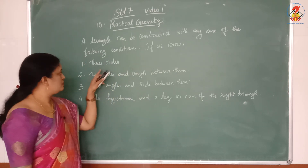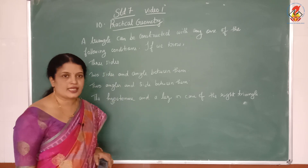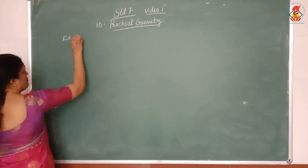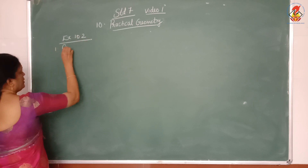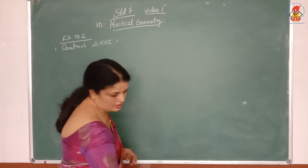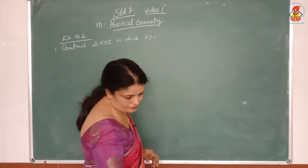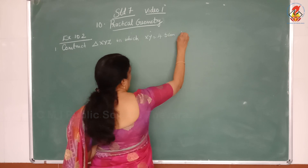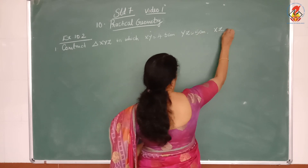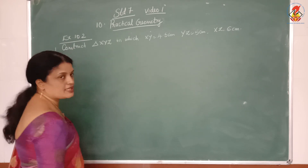First, we are going to discuss how to construct a triangle when three sides are given. Exercise 10.2, Question number 1: Construct triangle XYZ in which XY = 4.5 cm, YZ = 5 cm, and XZ = 6 cm. What is the first step of this construction?